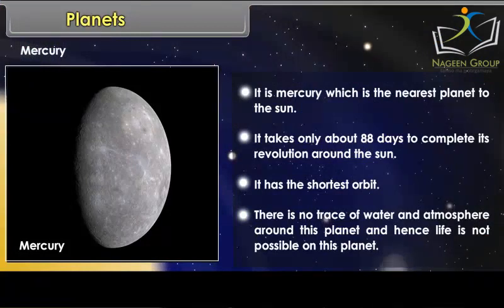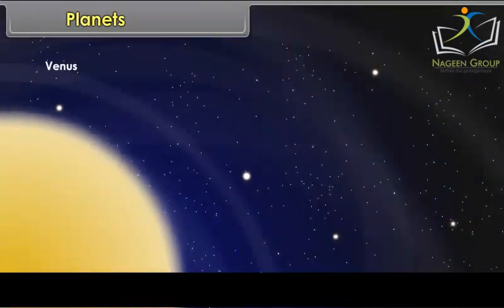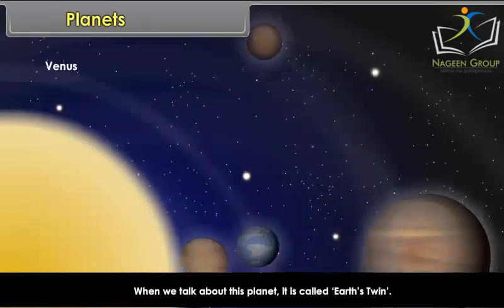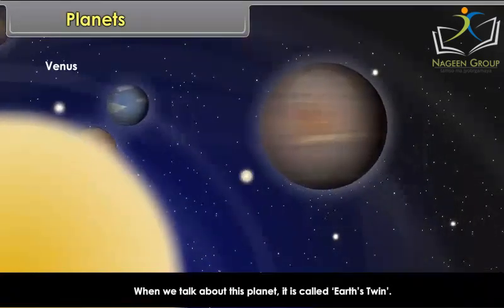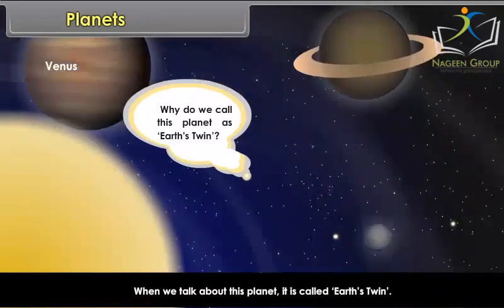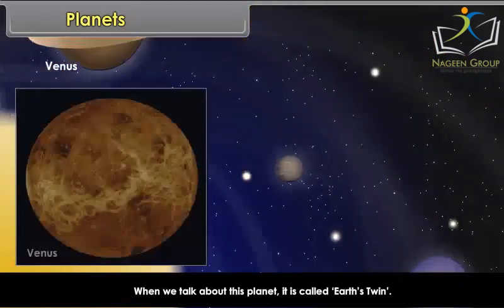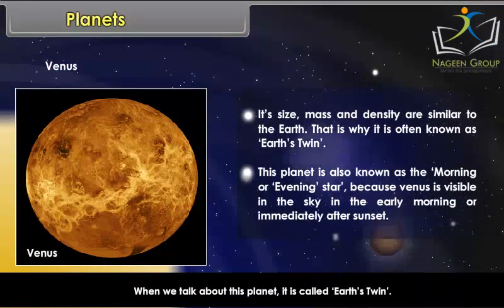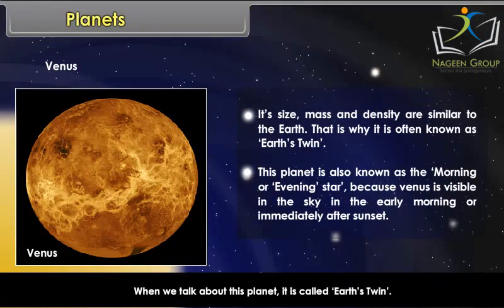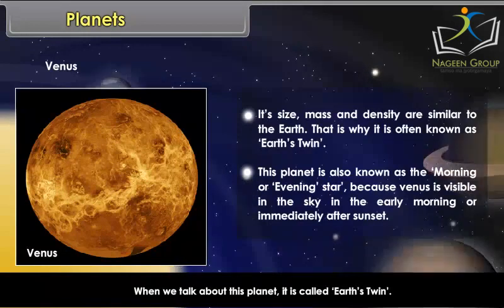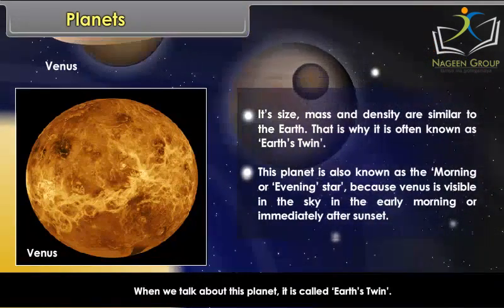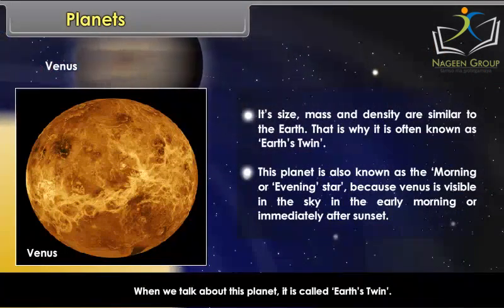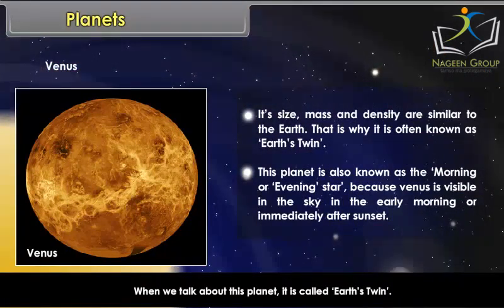Venus is called Earth's twin because its size, mass and density are similar to the Earth. This planet is also known as the morning or evening star because Venus is visible in the sky in the early morning or immediately after sunset.